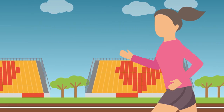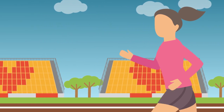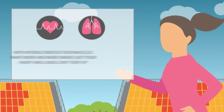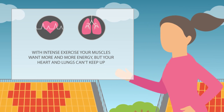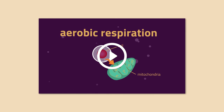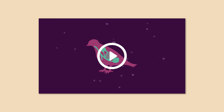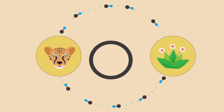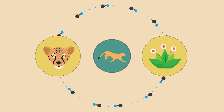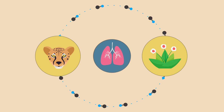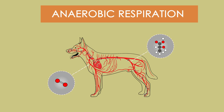You are running a 1500 meter race, breathing deeply to get the oxygen so that you can respire and keep up the energy supply to your muscles. Your muscles keep wanting more and more energy, but your lungs can't keep up. Do you have to quit the race? No. In this video we are going to have a look at anaerobic respiration in both animals and plants — the backup plan when aerobic respiration can't keep up.